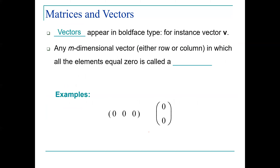Vectors appear in both types. Any m-dimensional vector, either row or column, in which all the elements equal zero is called a zero vector. Here is an example for a row vector and an example for a column vector.